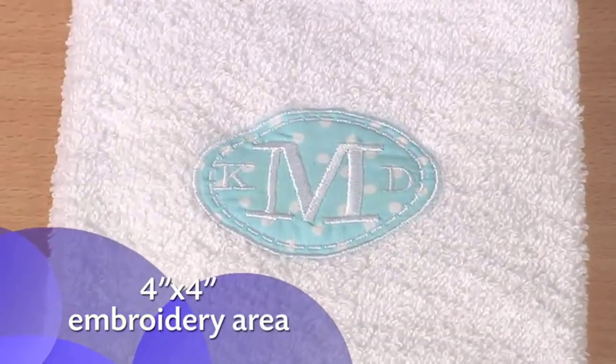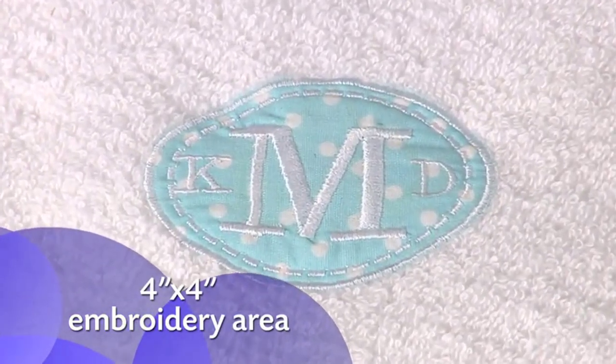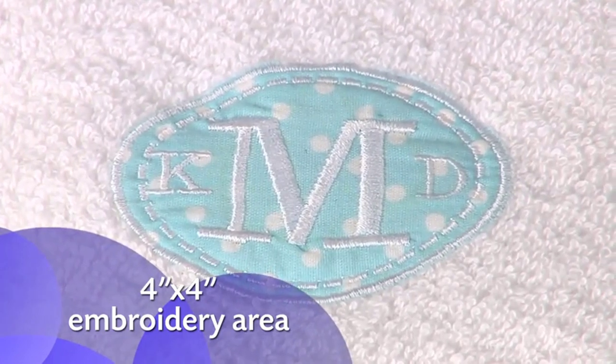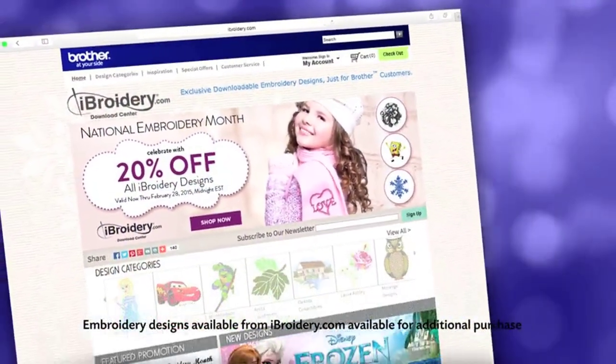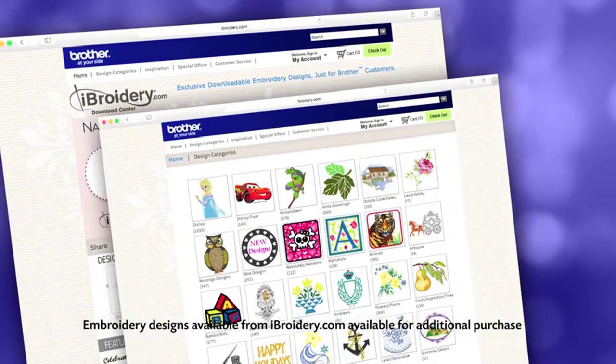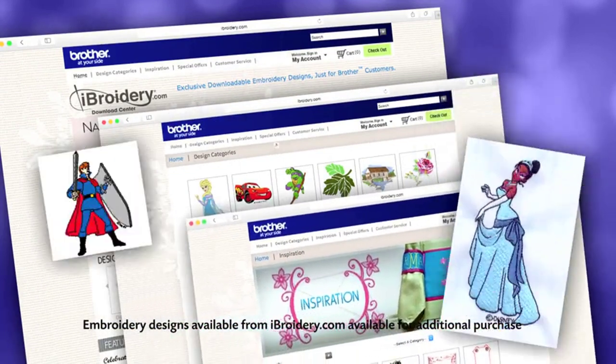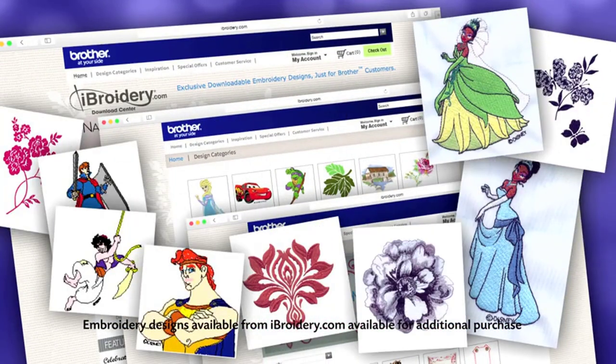And the 4x4 inch embroidery area is just the right size for doing your favorite monogrammed applique. You can even import thousands of embroidery designs from iBroidery.com and other websites for virtually unlimited design options.